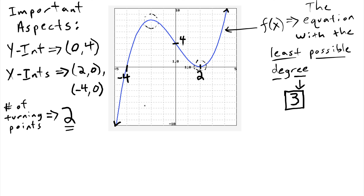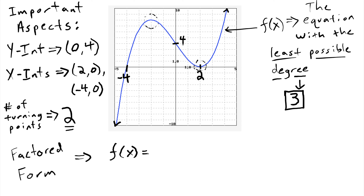With this information, we are ready to actually determine what our equation is going to look like. We're going to give our function f(x) as the product of multiple linear factors. Where these come from are the x-intercepts. We know that x equals negative four is an x-intercept, which means the factor that's going to be necessary in our function is x plus four. And similarly, because x equals two is the location of another x-intercept, x minus two is going to be a factor.